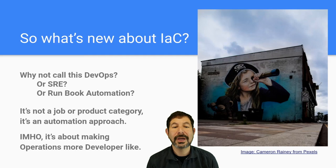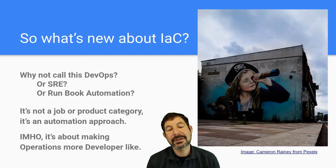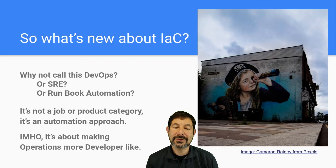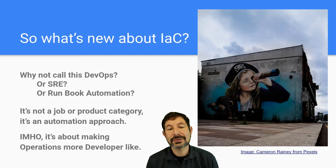But first, we need to talk about what's new in infrastructure as code, and why we don't just call this DevOps or SRE or runbook automation. The challenge here is infrastructure as code is not a job or product category. It's really an infrastructure automation approach. And that's a powerful thing to understand. Very much like how DevOps is a union between developers and operators, it's really about taking operational work and making it more developer-like — what I often think of as the CIO pounding on the desk saying, "Why can't my ops team be more like my development team?" That's what infrastructure as code is about, and it's a good practice.